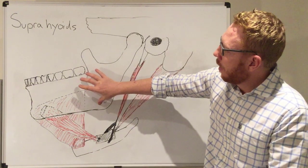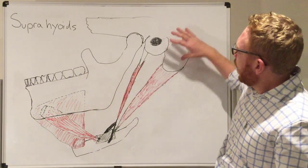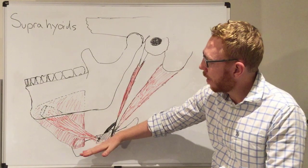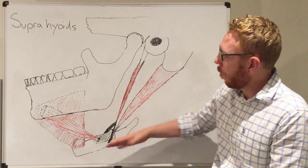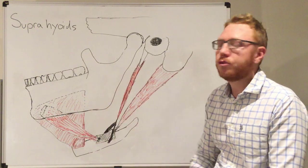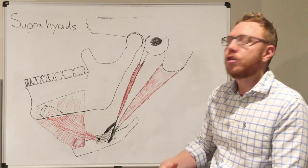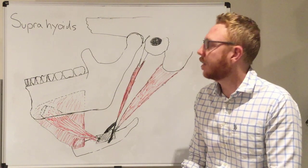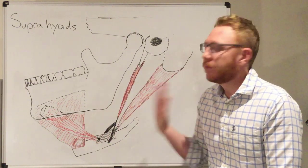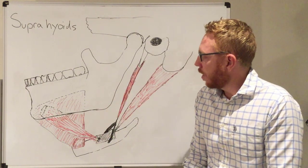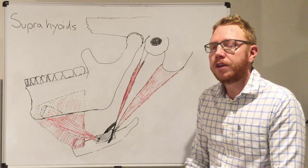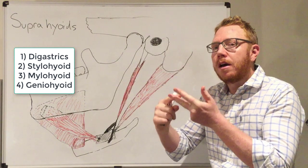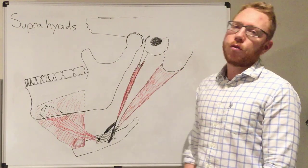These muscles originate either in the mandible, which is the bone of the jaw, or at the base of the skull. They will either elevate or retract the hyoid, or when the hyoid is fixed, help to depress the mandible. They're located between the superficial neck group — the platysma and sternocleidomastoid — and the deeper group closer to the vertebra. The four muscles are: the digastric, the stylohyoid, the mylohyoid, and the geniohyoid.